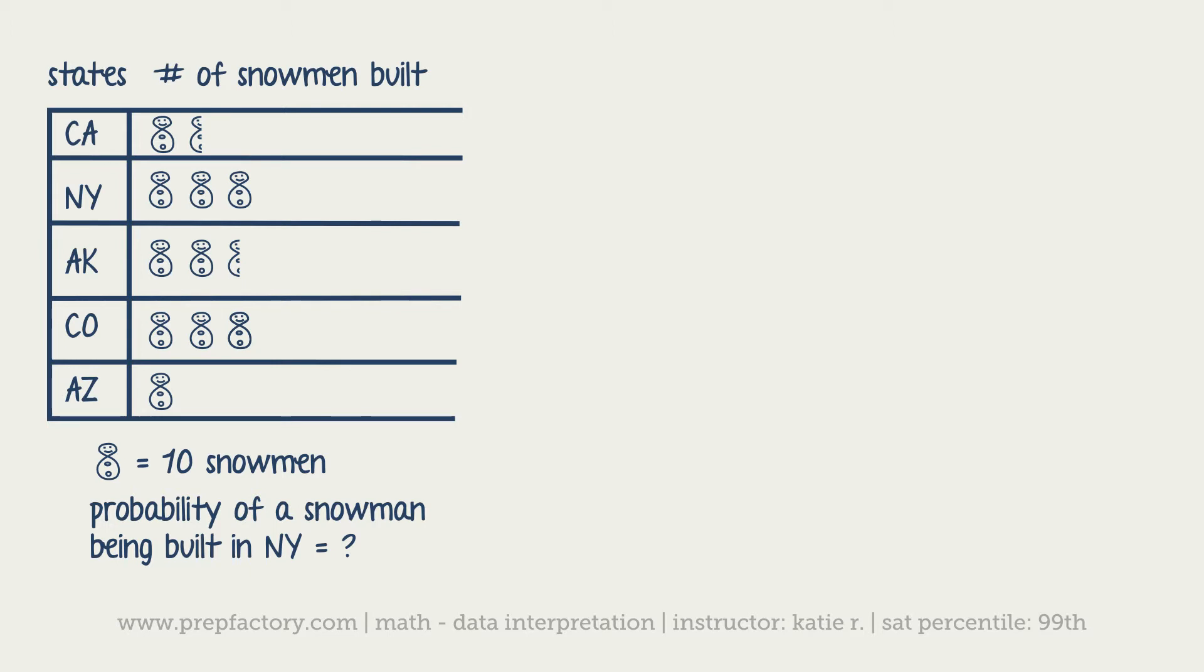What is the probability of a snowman being made in New York given the table that we have? No joke, that really is an ACT problem. Occasionally they like to have fun too, but it's a legitimate problem because we're asked something like this multiple times on the test. It's just a probability problem with this interesting little chart to go along with it. We know that probabilities are the desired over the total, so we're looking for desired over total.